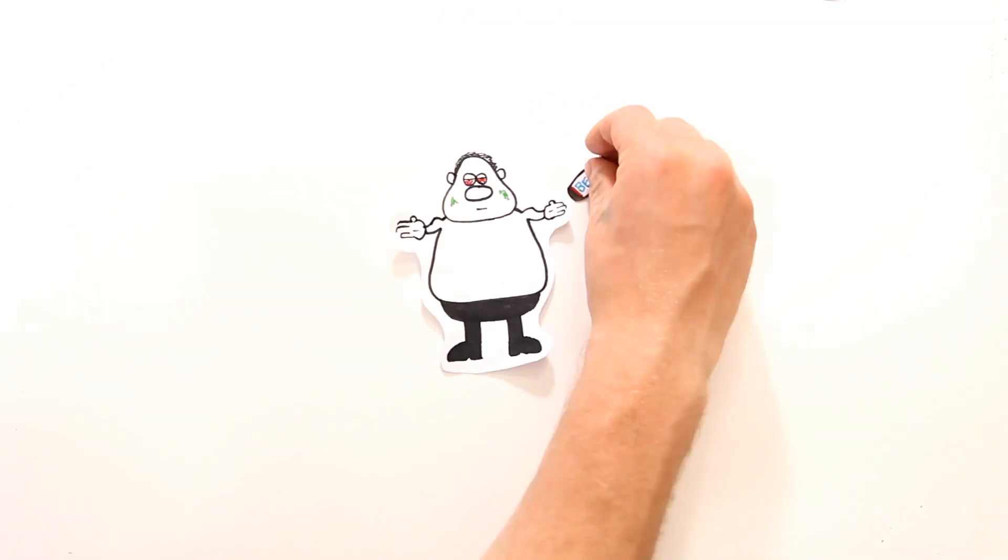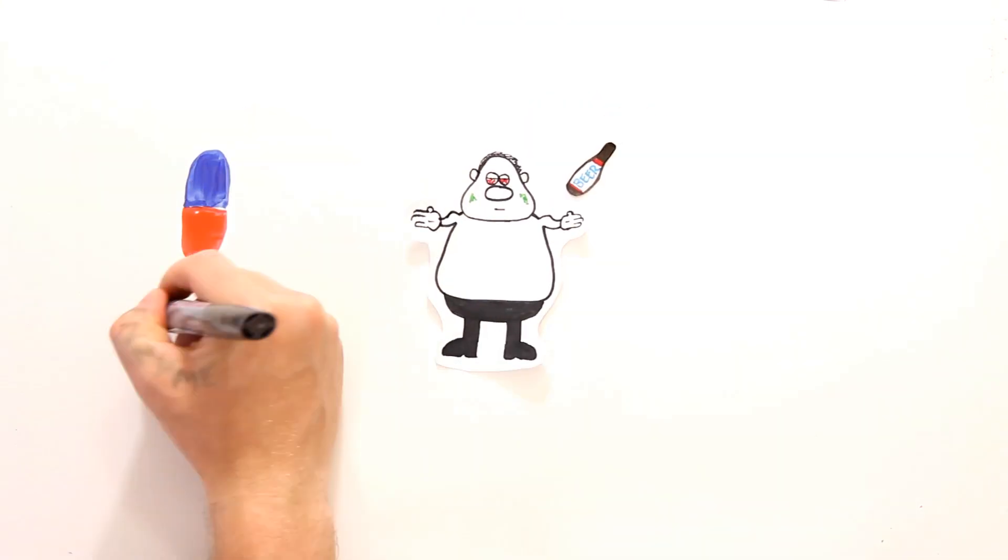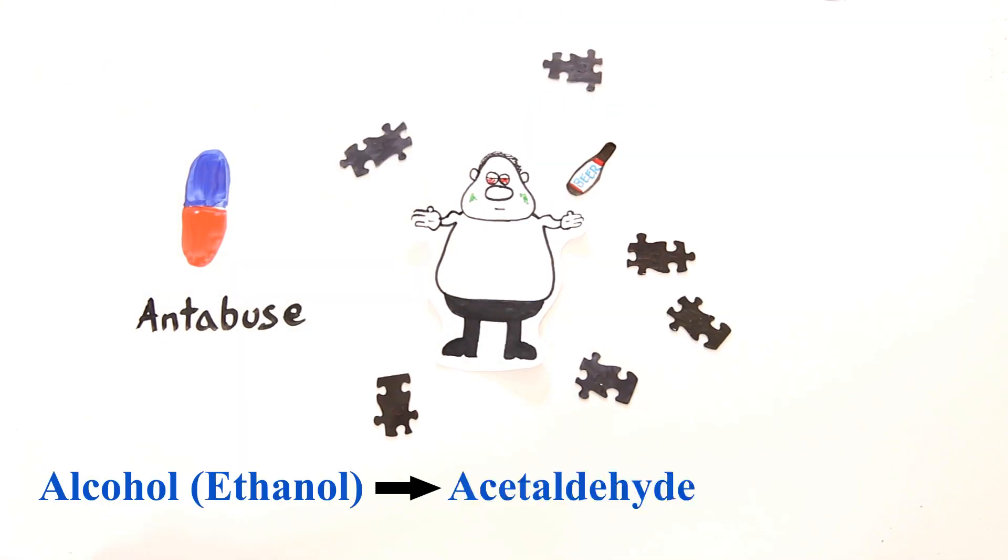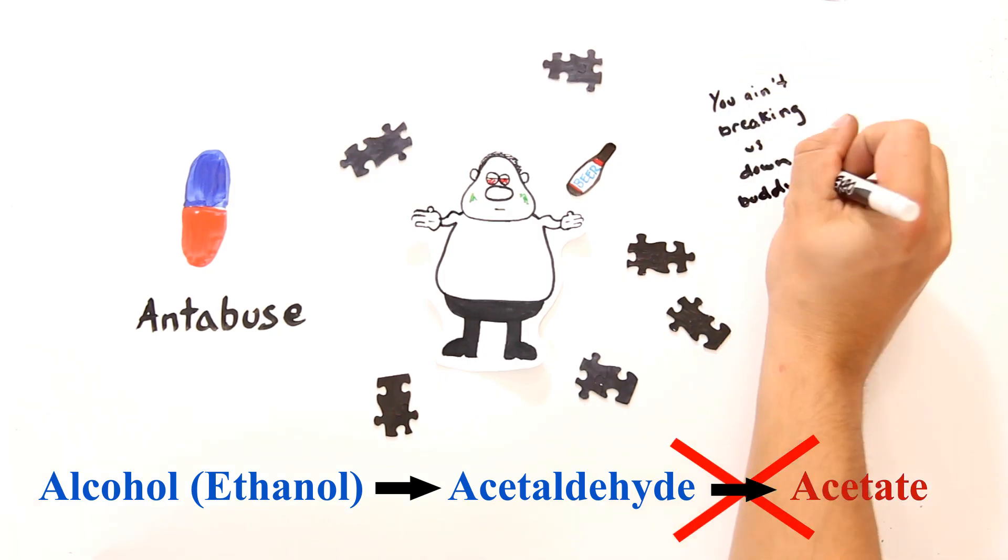In fact, suffering alcoholics are often given a drug called antabuse in order to stop the conversion of acetyl aldehyde to acetate. This causes them to feel the pain of their hangover much more severely in hopes to have them stop drinking.